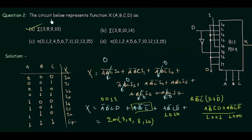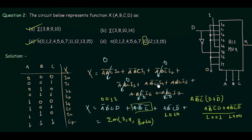Since the min terms are 3, 8, 9, and 10, the max terms are all the remaining values: 0, 1, 2, 4, 5, 6, 7, 11, 12, 13, 15. Option c — which includes 10 as a max term — is incorrect because 10 is a min term. So options a and c are the correct answers for this problem.